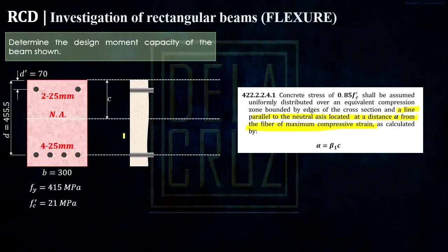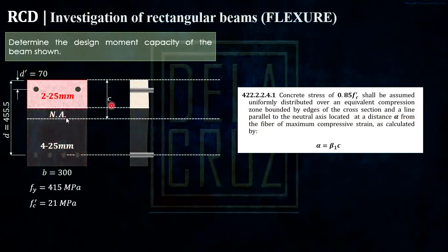A line that is parallel to the neutral axis located at a distance A from the fiber of maximum compressive strain. If we will draw it here, it will form a parallel line from the neutral axis. This is the neutral axis and this will be the parallel line. And we will cut it here. Ito yung magiging effective compression block ng ating concrete. Well, theoretically, the effective compression is from the neutral axis.